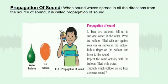What is propagation of sound? Sound is said to be propagated when sound waves spread in all directions from a source of sound. Take two balloons — fill air in one and water in the other. Press the balloon filled with air against your ear as shown in the picture. Rub a finger on the balloon and listen to the sound. Repeat the same activity with the balloon filled with water. Through which balloon do you hear a clearer sound? Sound travels in the form of waves through air, water, or a solid and reaches our ear. Sound is propagated more clearly through a liquid than through air, and it is heard even more clearly through a solid.